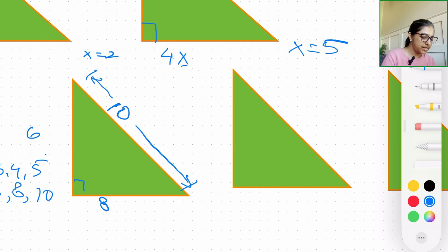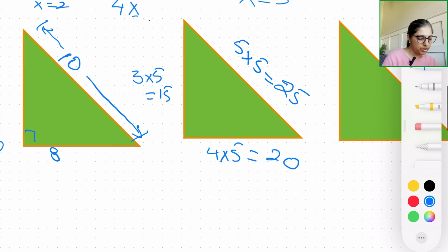Same way, we can take x being equal to, let's say, we can even take 5 for example. So this side can be 3 × 5, which is going to be 15, 4 × 5, which is going to be 20, and 5 × 5, which is going to be 25.